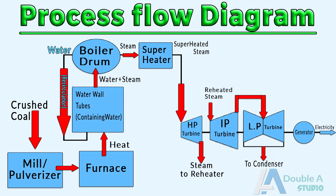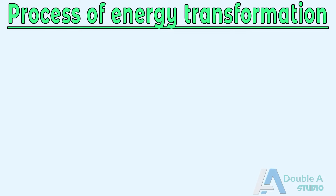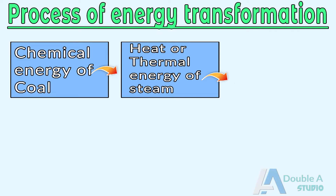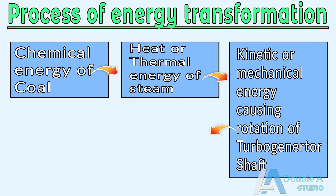The simplified version of the process flow diagram can be seen here. The energy transformation during these processes can be understood as follows: chemical energy of coal converts into heat or thermal energy, which is carried by steam and gets converted into kinetic energy in the turbine.